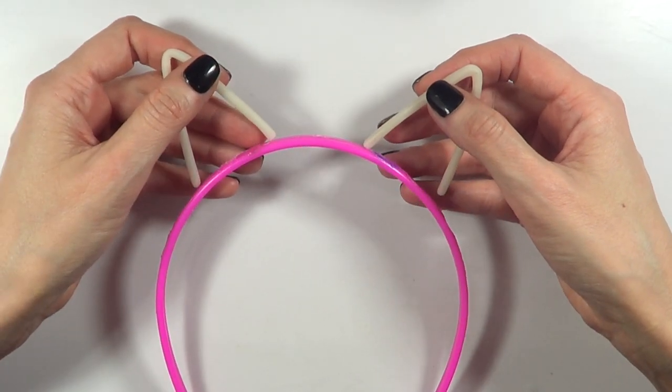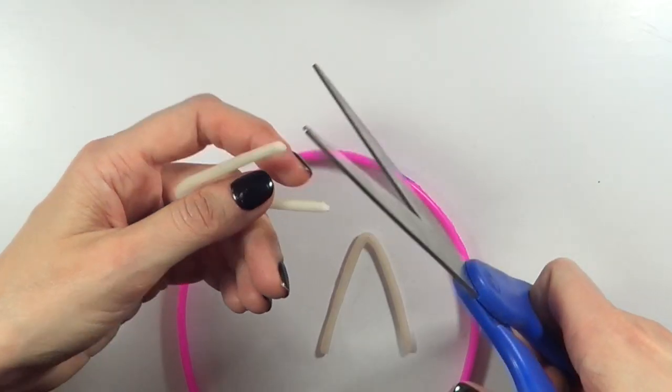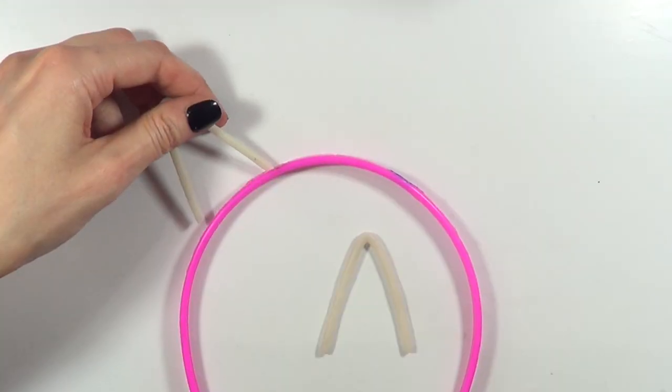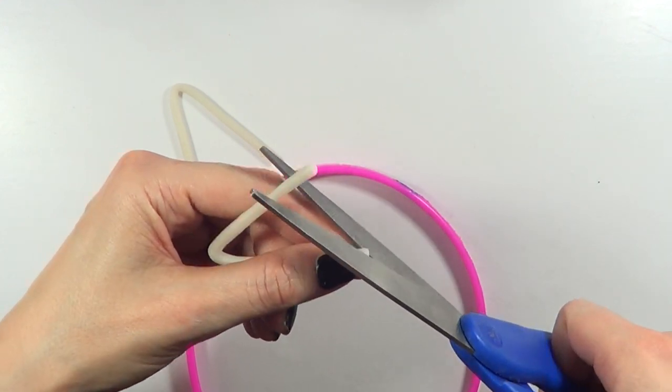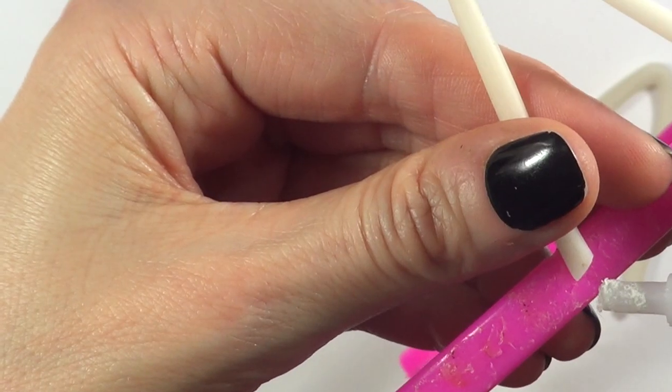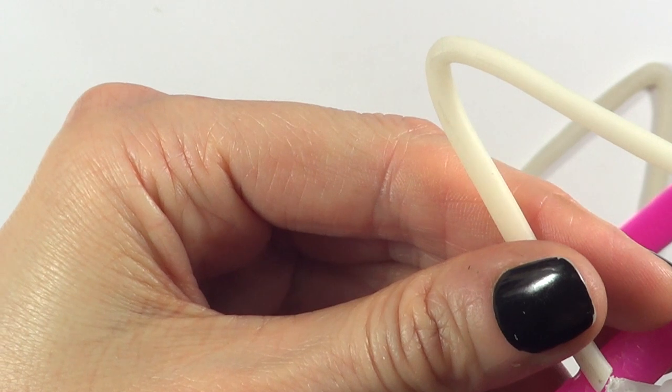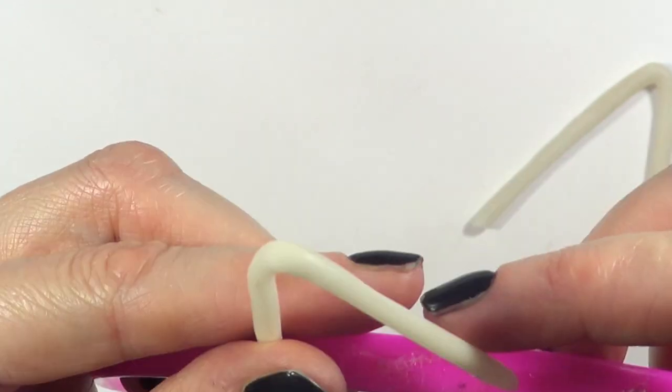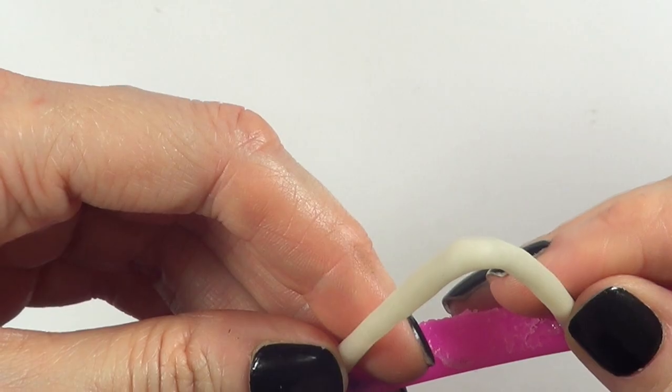Once my clay pieces have dried, I'm just going to be cutting the edges to adapt them to the shape of the headband. Cutting that with scissors. Pretty easy to cut when this clay dries. So yeah, I'm just going to be gluing these with some super glue. I didn't use hot glue because I don't think it's going to work that well with this.